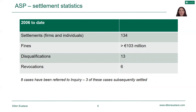This slide looks at some of the settlement statistics to date. There have been 134 settlements entered into with firms and individuals, and fines of over €103 million have been imposed. There have been 13 disqualifications and six revocations. Eight cases have also been referred to inquiry, and three of those cases have subsequently settled.